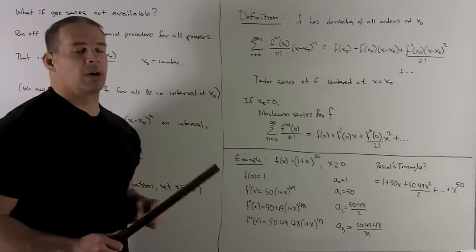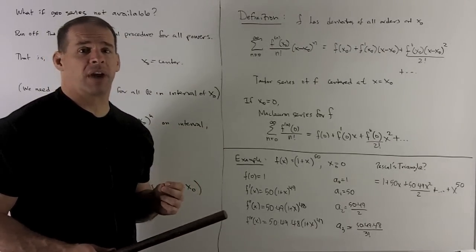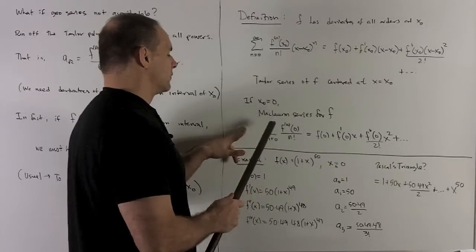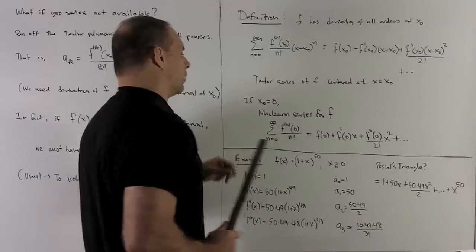If x equals zero, we call it the McLaren series for f. Same idea, taking the McLaren polynomial for f of some degree, letting the degree run off to infinity.